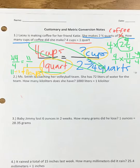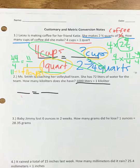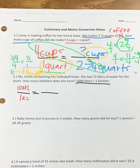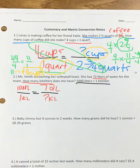The next problem says Miss Smith is coaching her volleyball team and has 72 liters of water — how many kiloliters does she have? Set up your proportion and write the conversion first: one thousand liters equals one kiloliter. Just like before, you must keep your units consistent. Since liters is on top and they gave us liters in the problem, 72 liters goes on top. The unknown is kiloliters.